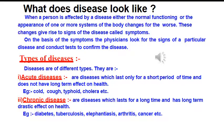We have discussed this already: what does disease look like? When a person is affected by a disease, either the normal functioning or the appearance of one or more systems of the body changes for the worse. These changes give rise to signs of the disease called symptoms. Now let us talk about the types of diseases.